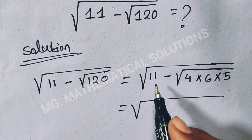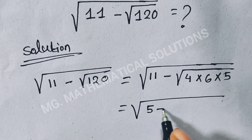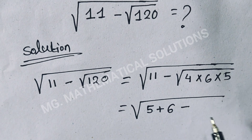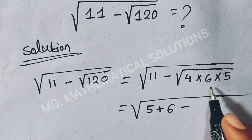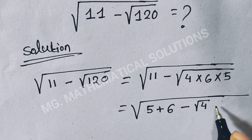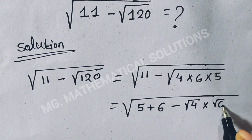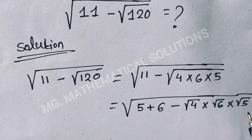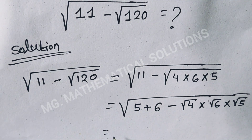Now 11 we can write as 5 plus 6, minus this term we can write as root 4 times root 6 times root 5, equals...